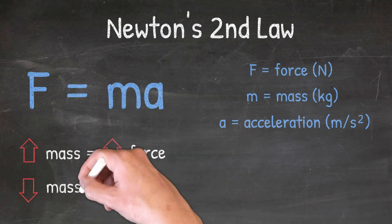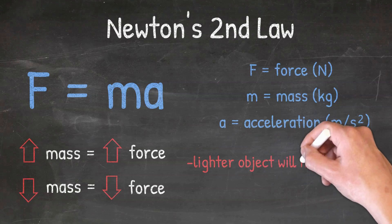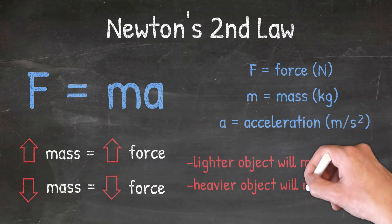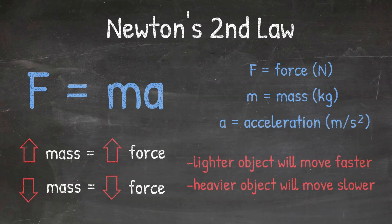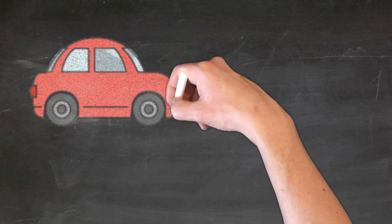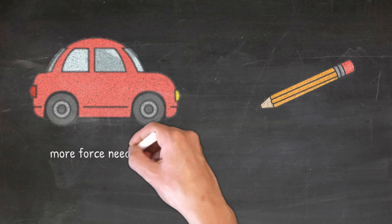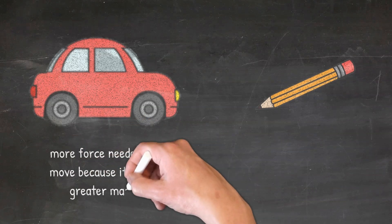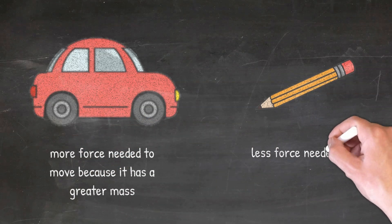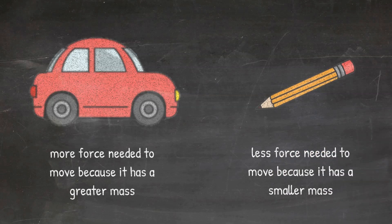The smaller the mass, the less force it will take to accelerate it. And if you apply the same force to two different objects, the lighter object will move faster and the heavier object will move slower due to their different masses. For example, if I'm trying to get a car or a pencil to start moving, the car is going to require more force because it has a greater mass, whereas the pencil requires less force because it has a smaller mass.